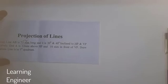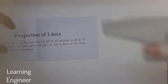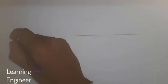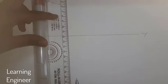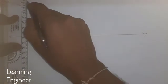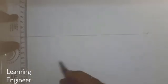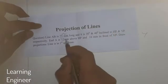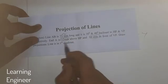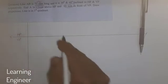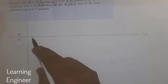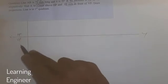Let us go for drawing the projections. First we will draw a reference line known as the XY line — this is our reference line. At the same time we will draw a vertical line and mark 12 mm and 10 mm. 12 mm above HP and 10 mm in front of VP. Above the XY line we have the horizontal plane and below the XY line we have the vertical plane.